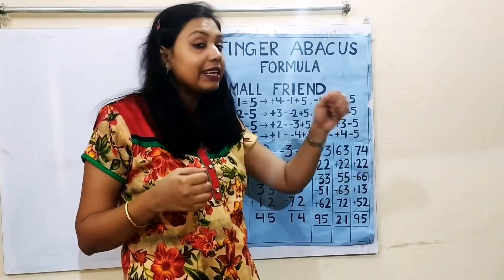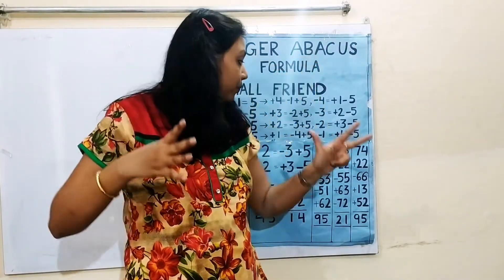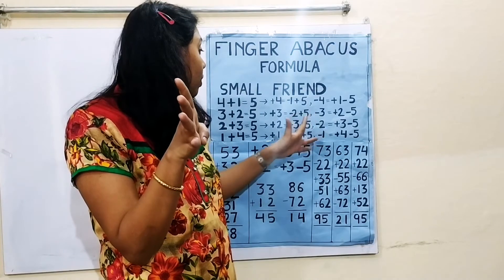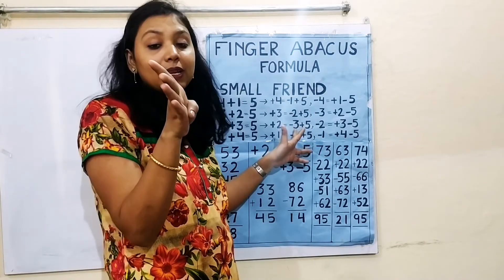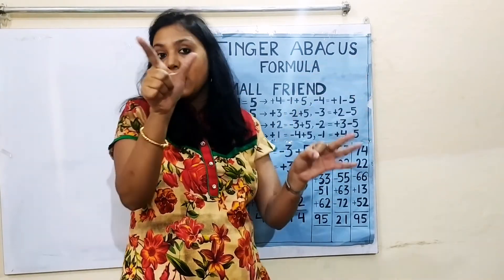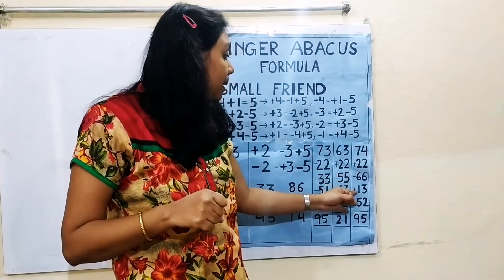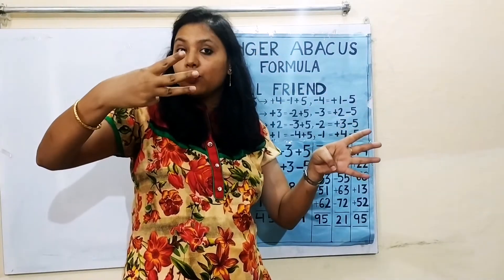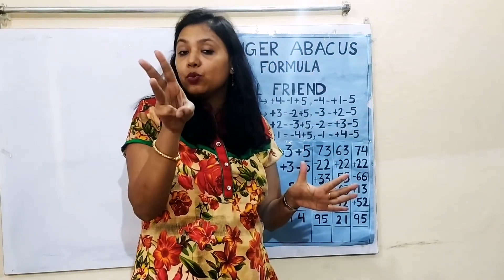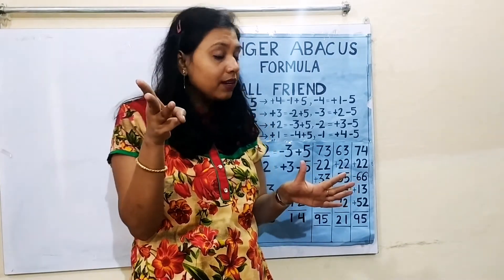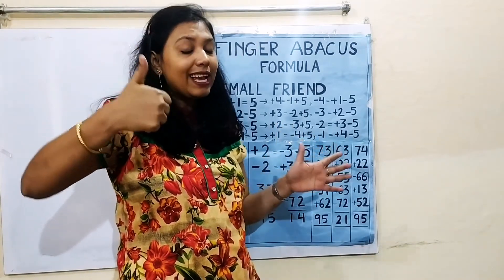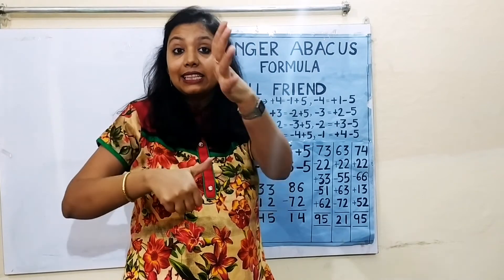Next question: 74, plus 22 — add 20, then plus 2 using formula minus 3 plus 5. Then minus 66 — minus 60 and minus 6. Then plus 13 — plus 1 and plus 3. Then plus 52 — plus 50 and plus 2 using formula minus 3 plus 5. The answer is 95.